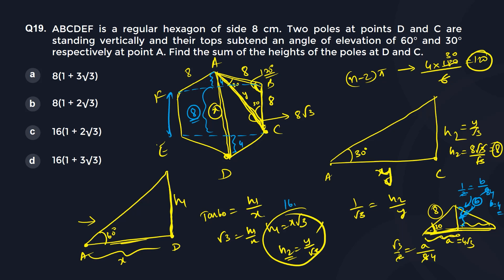So this is 16 root 3 plus 8. Or if you take out 8 common, 2 root 3 plus 1, which is there in your option b.